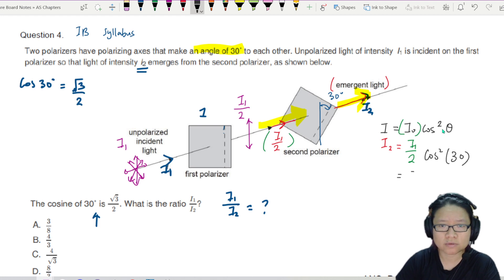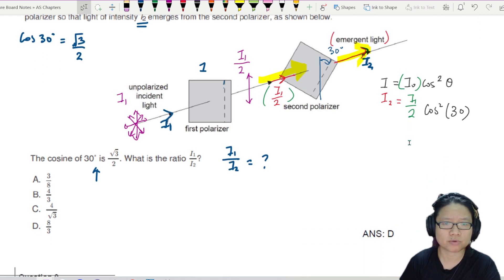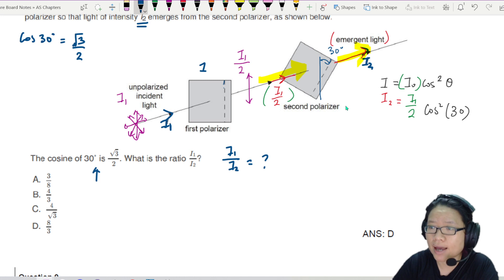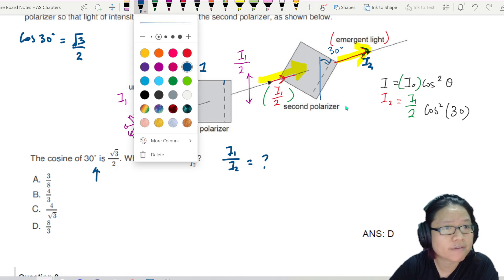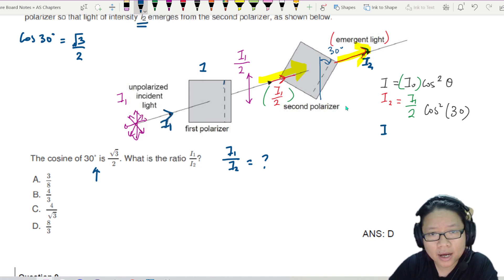Good news. We want I1 over I2, right? So I can rearrange a bit. Let me do that first. Let me scroll down a bit. And let me rearrange. So when I rearrange this, I will have I1 over I2 is equivalent to 2 over cos 30 degrees squared.